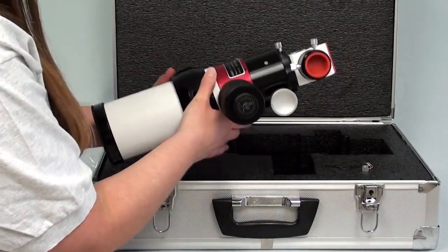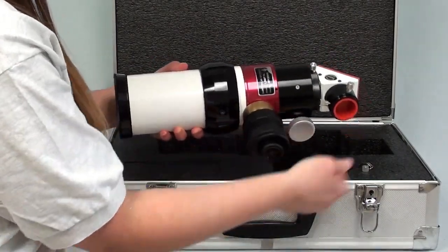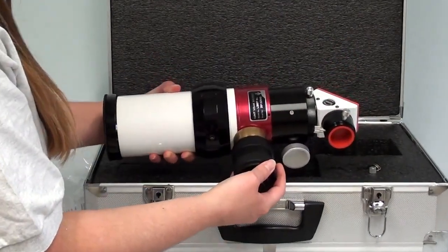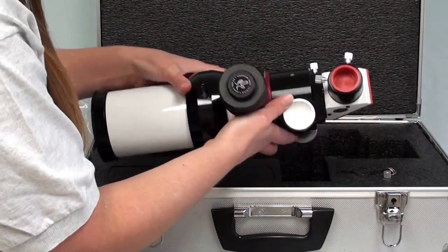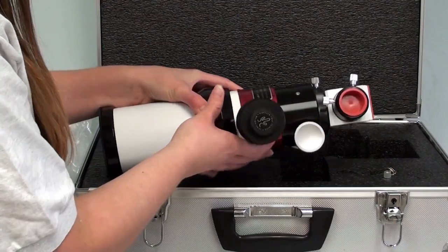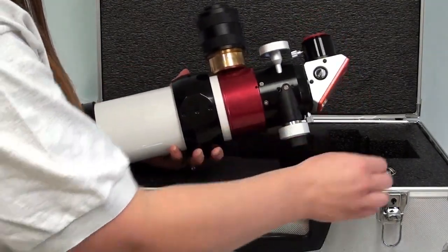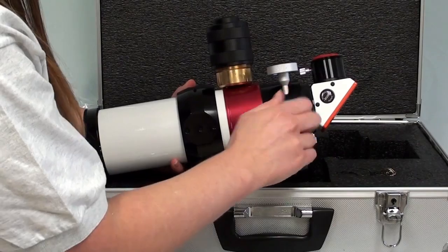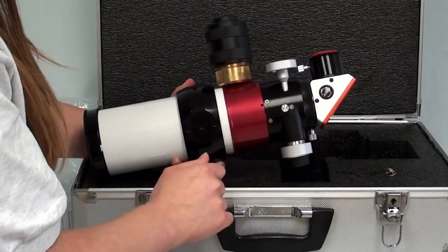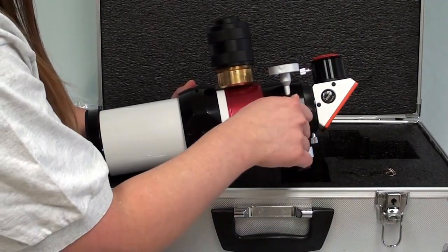Now here we have the LS60 with the B1200 blocking filter. Some visual users will choose the B600. And here we have your pressure tuner knob, your focuser, and this is where that locking screw will go. That will prevent any slippage if you're using heavy camera equipment or heavy eyepieces.